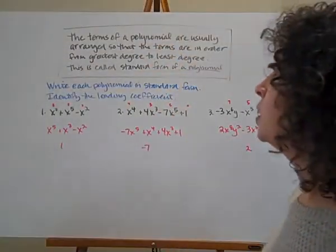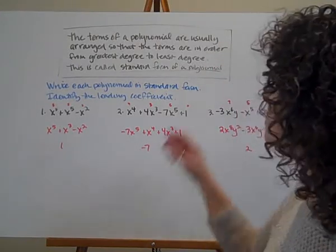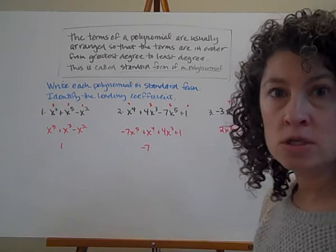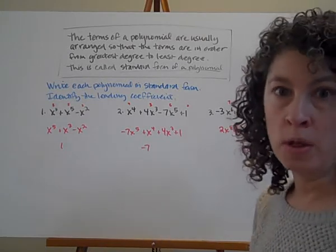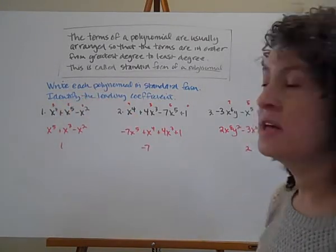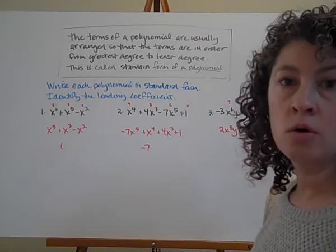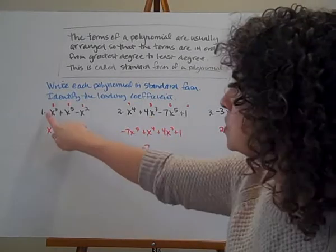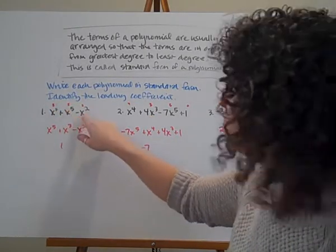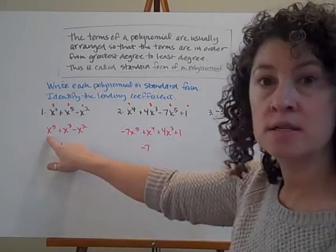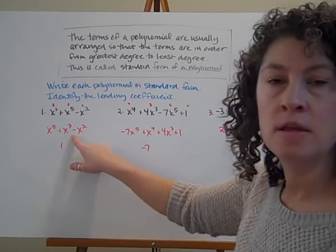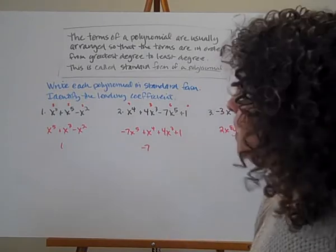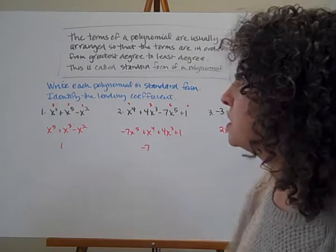Let's look at standard form of polynomials. The terms are usually arranged from greatest degree to least degree — this is called standard form. We'll write polynomials in standard form and identify the leading coefficient. For x cubed plus x to the fifth minus x squared, the degrees are 3, 5, and 2 respectively. Rearranging gives x to the fifth plus x cubed minus x squared. The negative sign goes with its term. The leading coefficient here is 1.